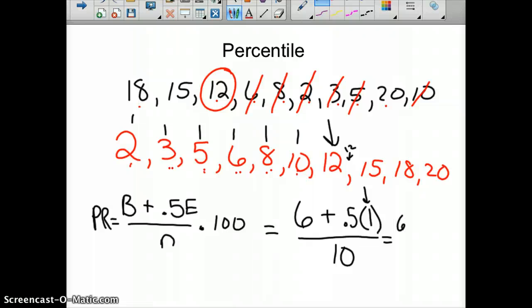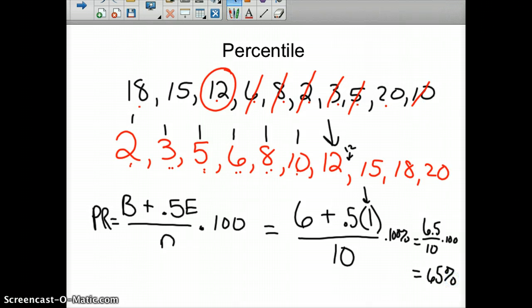So we keep on going. And you got 6.5. Oh, and I forgot the times 100. Times 100%. And so that would be 6.5 divided by 10 times 100, which would be 65%. So we are in the 65th percentile. Which tells me that I have done better than 65% of my peers on this test.